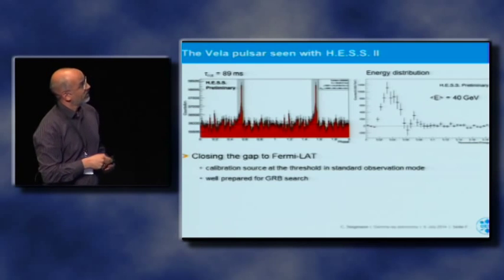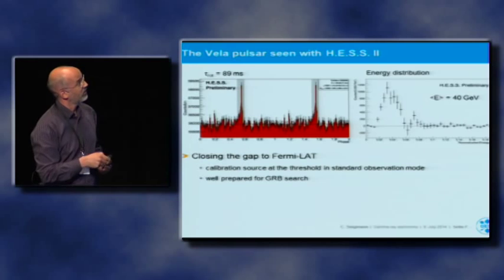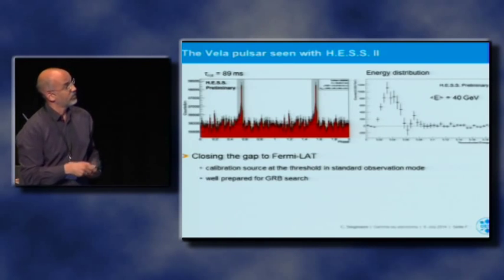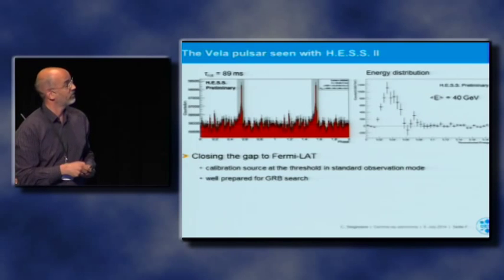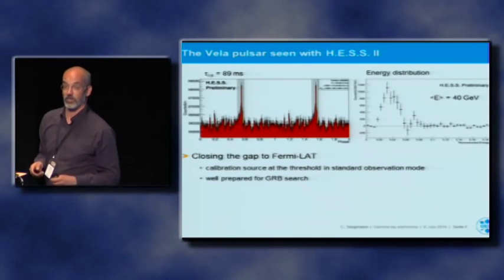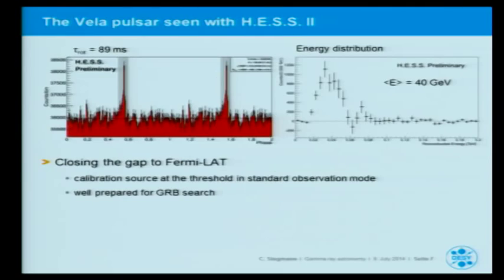The Vela pulsar was already known and seen by Fermi-LAT before. We can see in the phasogram — two cycles of 89 milliseconds — these nice peaks showing GeV emission from this pulsar on the ground, with an average energy of 40 GeV. This is really a source at threshold, which we can see even in standard observation mode, giving us a calibration source. Unlike a particle physics detector, you don't have a test beam — you need calibration sources. This means we can see transients down to thresholds of 30 GeV, which is very important for GRB searches with the big telescope.